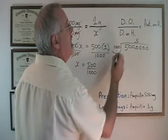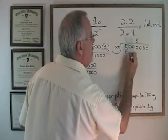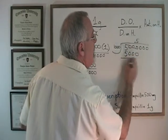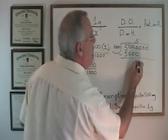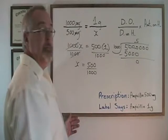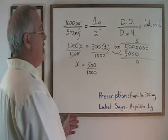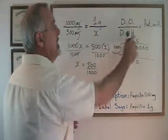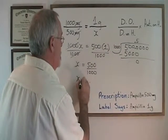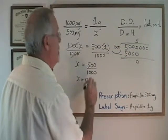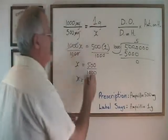So I write a 5 here. 5 times 1000 is 5000. And when I do my subtraction, I get 0. That means I am finished. It means that 500 divided by 1000 is equal to 0.5. And the unit was grams.